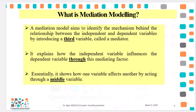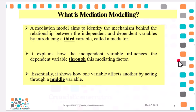Back to mediation modeling. A mediation model will simply aim to identify the mechanism behind the link between a regressor and a dependent variable by introducing a third variable called a mediator. It explains how the regressor will influence the dependent variable through a mediating variable — essentially, it shows how one variable will affect another variable by acting through a middle or intervening variable.